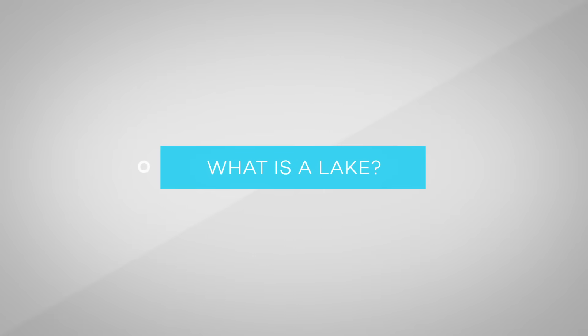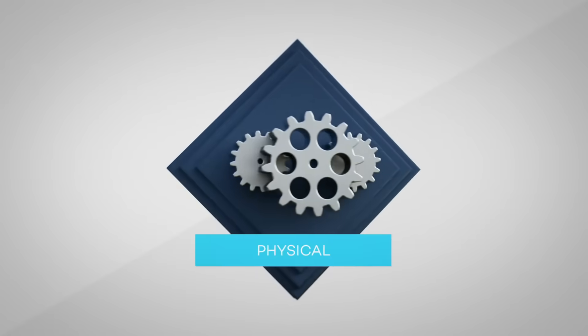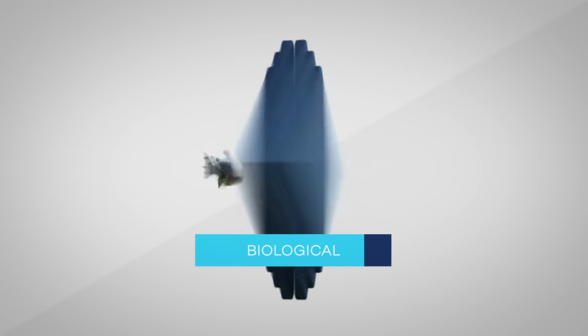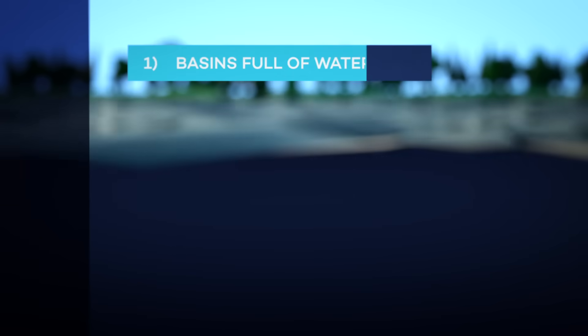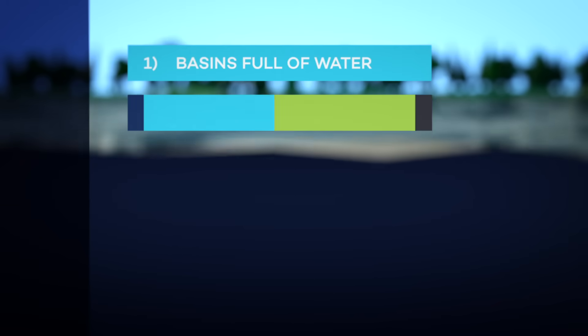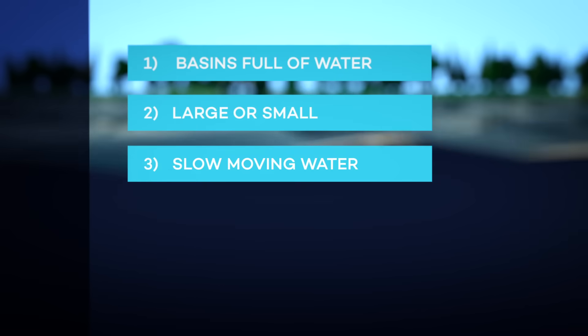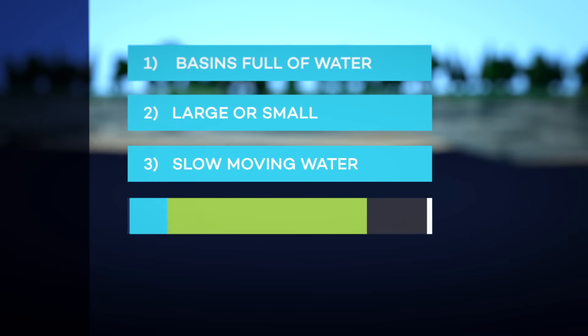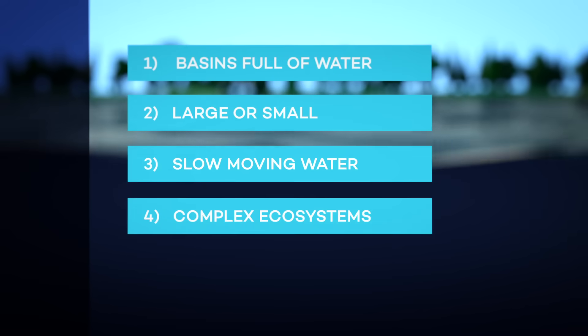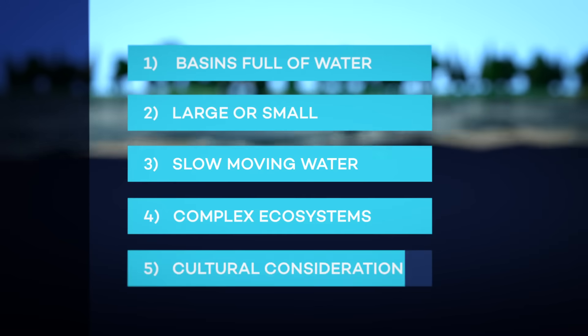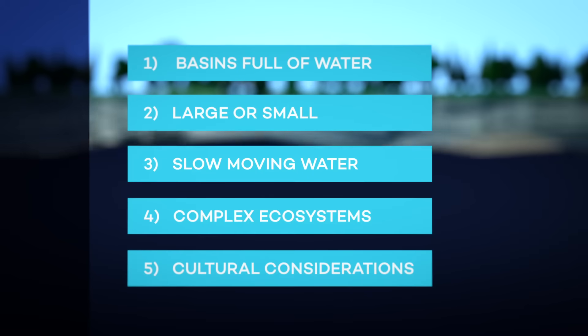What is a lake? We can define a lake by looking at its physical, chemical, biological, and social features. There are five main traits we can use to identify a lake: One, lakes are inland basins full of water. Two, lakes can be large or small. Three, lakes have slow-moving water. Four, lakes are complex ecosystems. And five, the definition can differ according to your culture. Let's explore each in more detail.